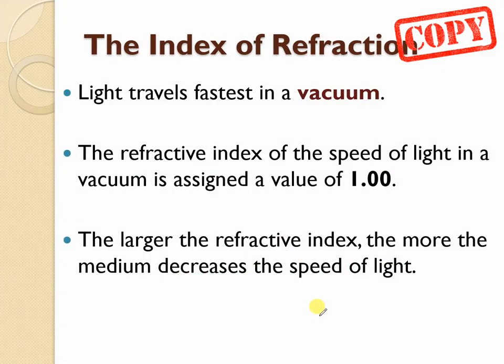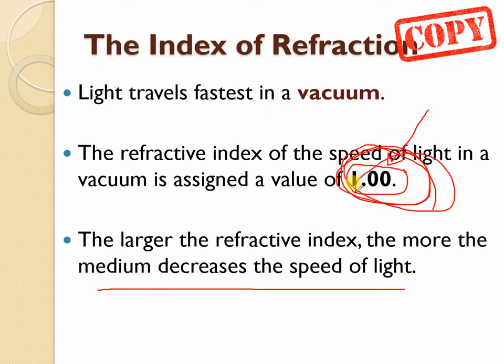Let's get this copy down here. We have to talk about the index of refraction. We're going to do some calculations. Light travels fastest in a vacuum, and a vacuum is where there's no air, so we're talking about outer space. We've assigned this value of one. This is like our reference point. That's like our speed of light in a vacuum. This is one, so that's as fast as it can go. It can only go slower than this. The larger the refracted index, the more the medium decreases the speed of light. It really has to do with density. The thicker and denser the object's going to be, the higher this number is going to go. One is as low as it can go.